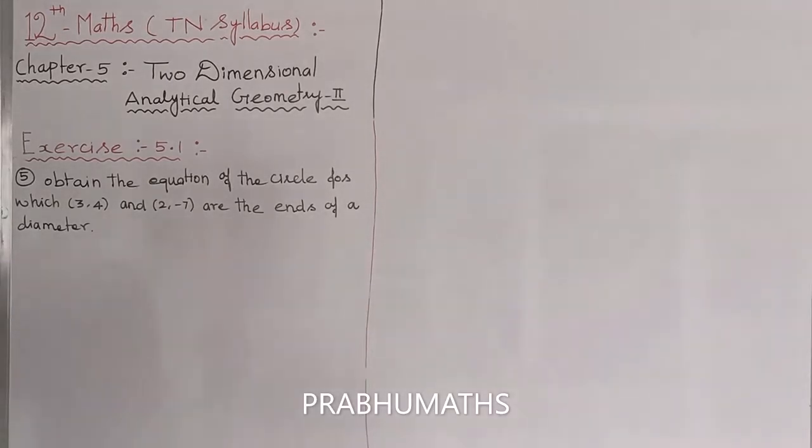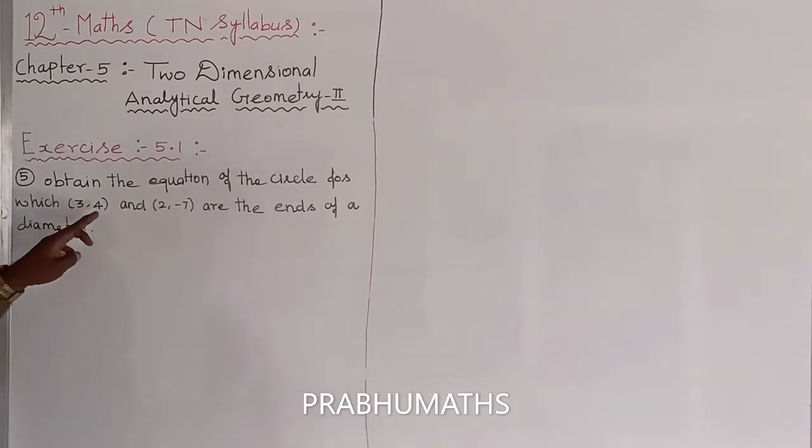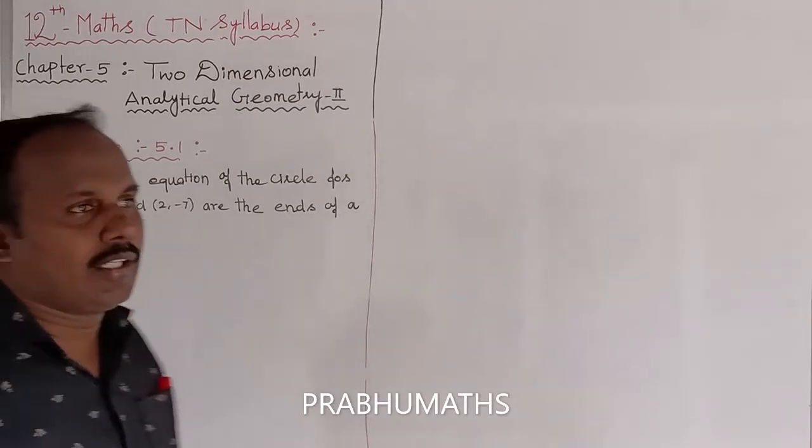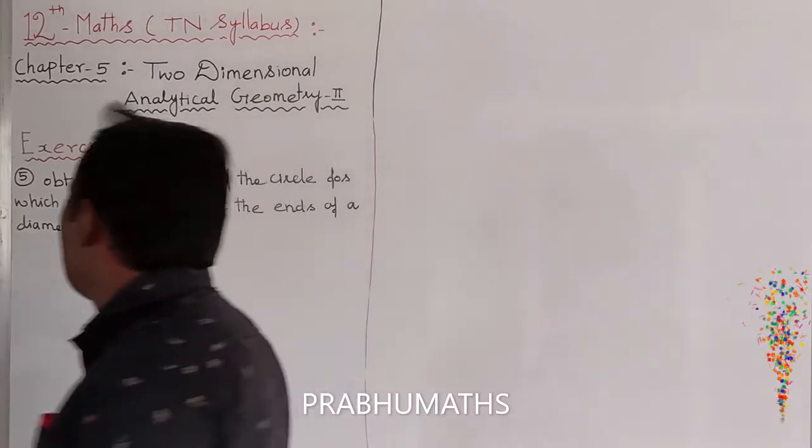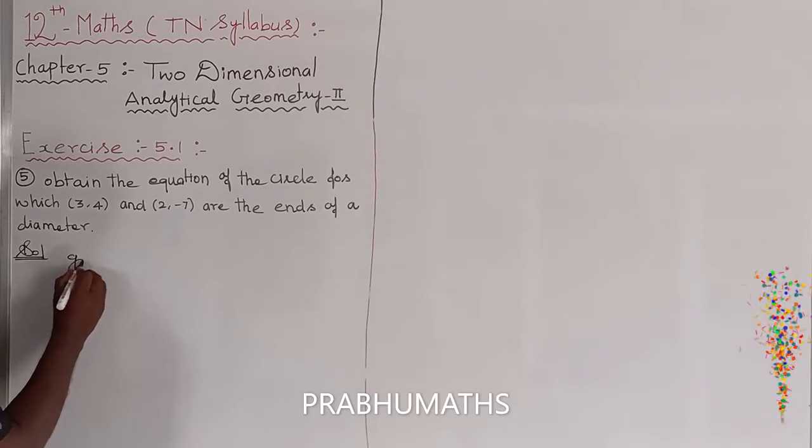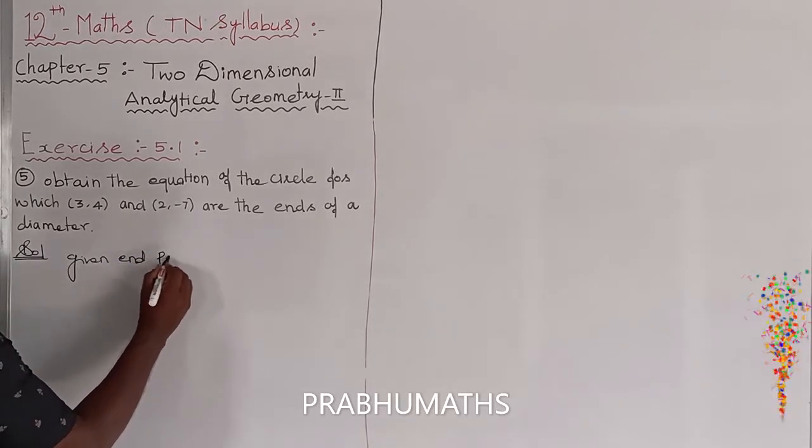Exercise 1.1, fifth sum: obtain the equation of the circle for which (3,4) and (3,2,-7) are the ends of the diameter. So there is the second method of circle formation. The given endpoints of diameter...